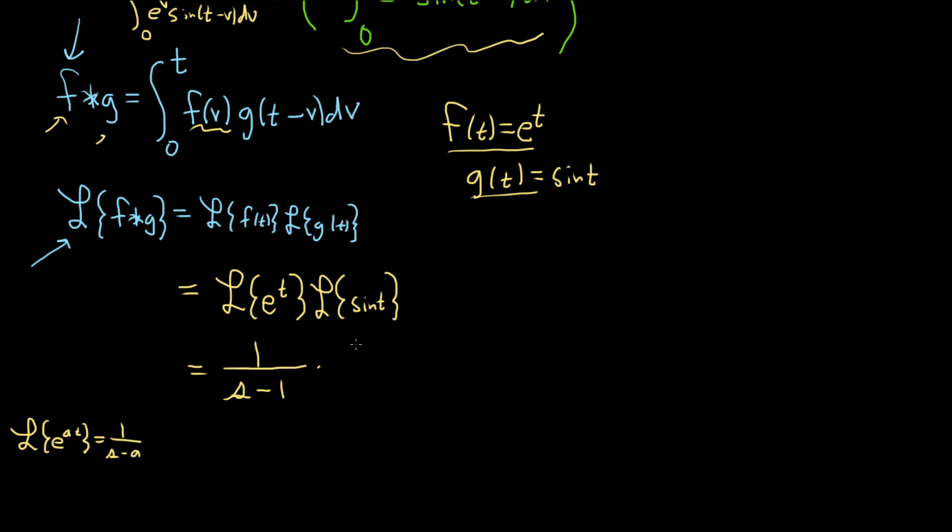And the Laplace of sine t will simply be 1 over s squared plus 1 squared. And that's because the Laplace of the sine of kt, lots of formulas in this problem, is equal to k over s squared plus k squared. And so in this case, k is equal to 1.